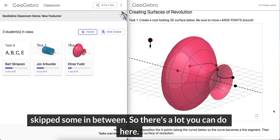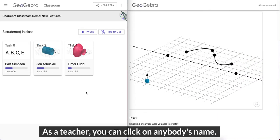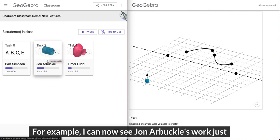Okay, so there's a lot that you can do here, and as the teacher, you can click on anybody's name as shown right here. For example, John Arbuckle.